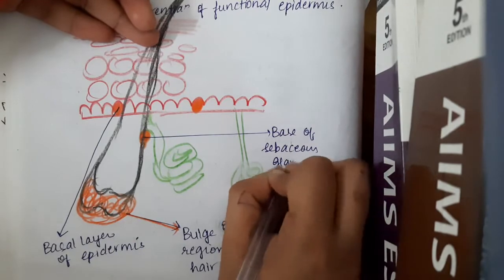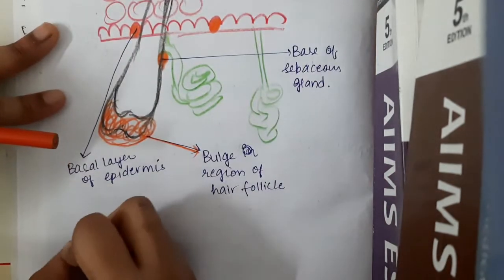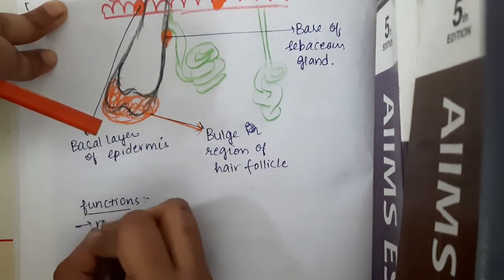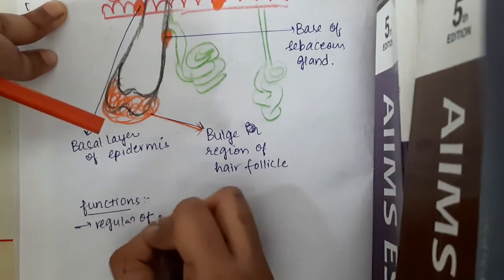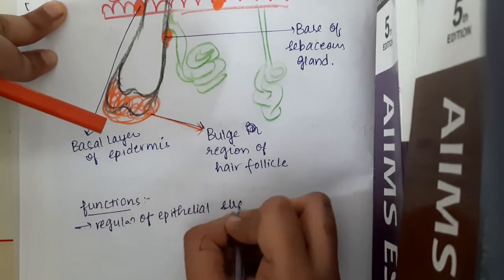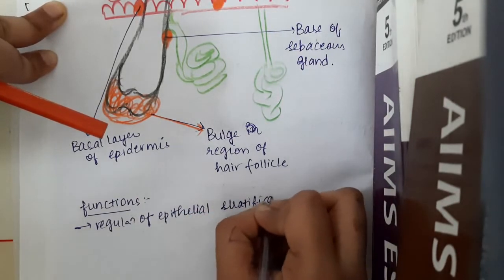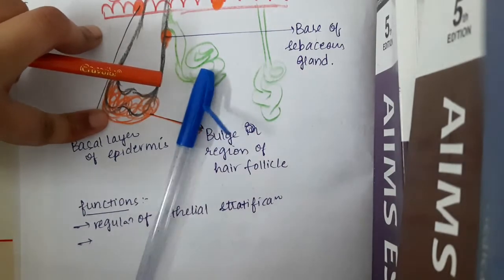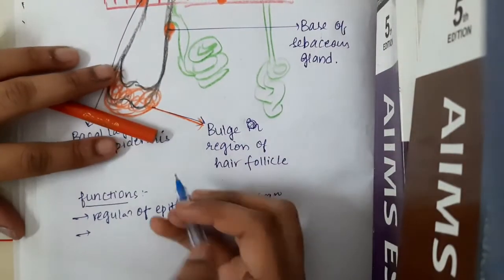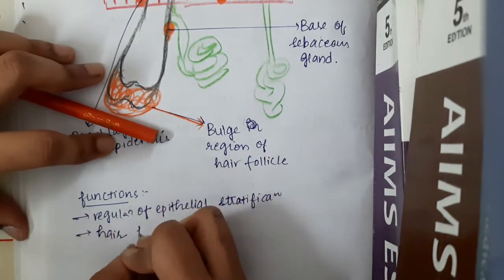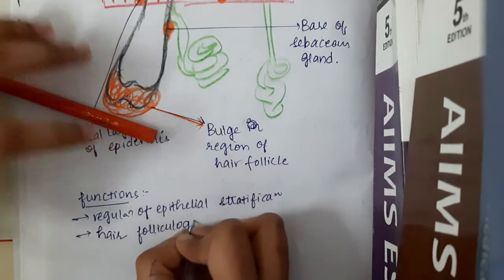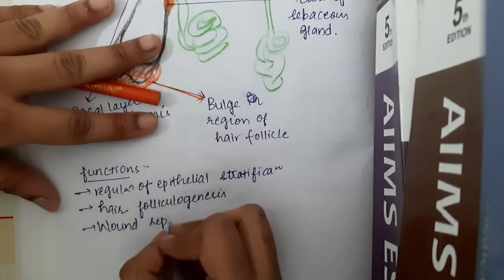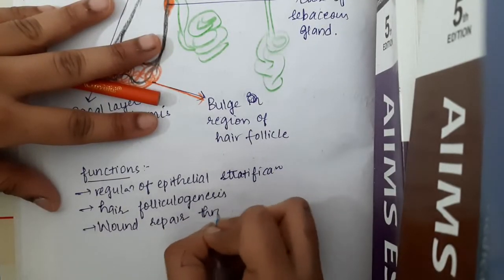The functions of epidermal stem cells include: regulation of epithelial stratification — the epithelium of the skin is stratified squamous epithelium, so stratification from stratum basal to stratum corneum is regulated by epidermal stem cells. The second important function is hair folliculogenesis, and third is wound repair throughout life.